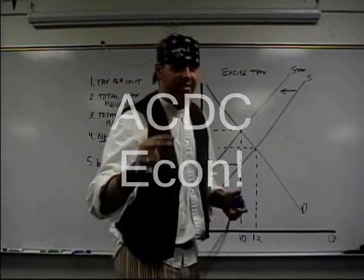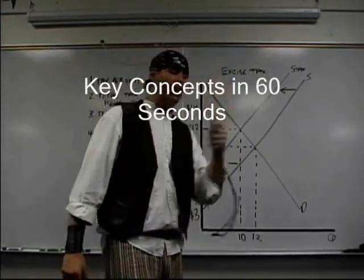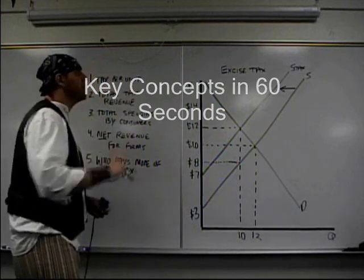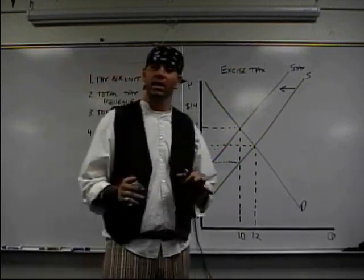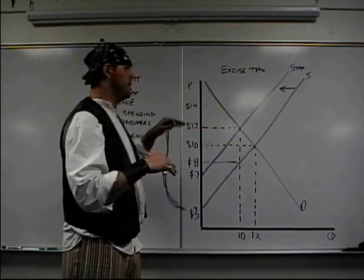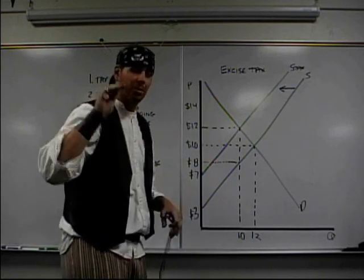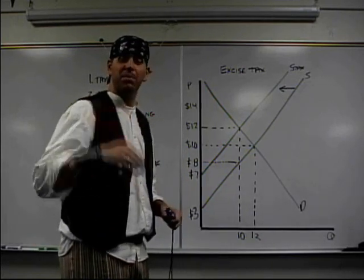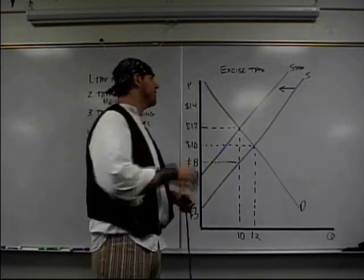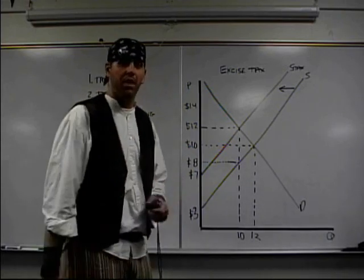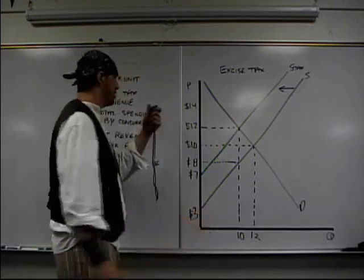This is Mr. Clifford with ACDC Econ, Key Concepts in 60 Seconds. Today we're going to talk about excise tax that get kind of tricky. It's going to shift the supply to the left, raise the price, decrease the quantity, but the price that consumers pay is not how much the producers get to keep. You're going to find out that consumers and producers have to pay part of this tax. Let's start the clock.